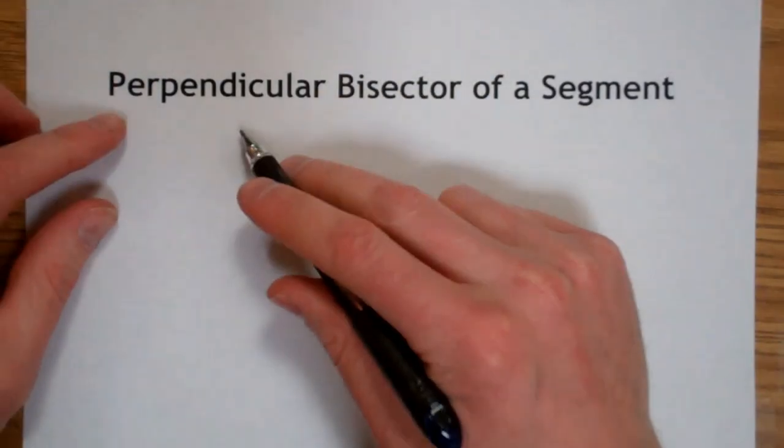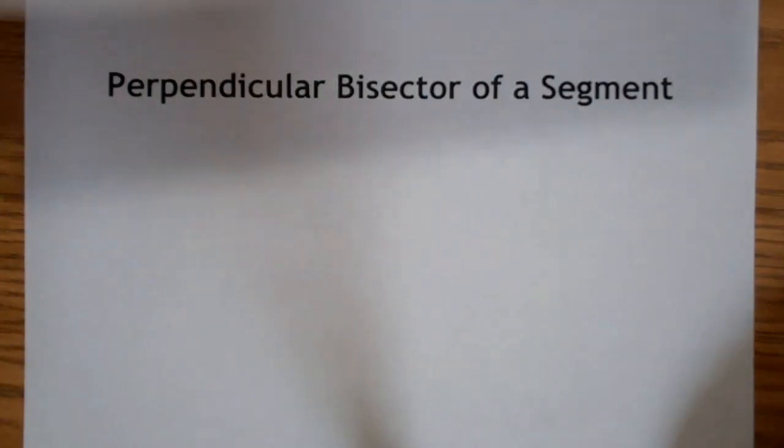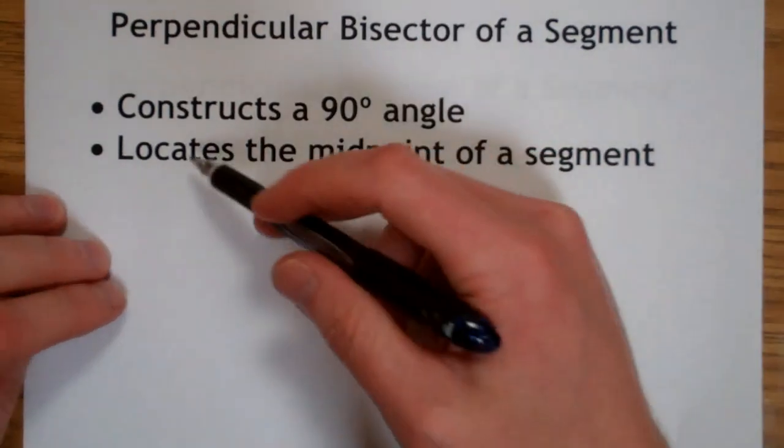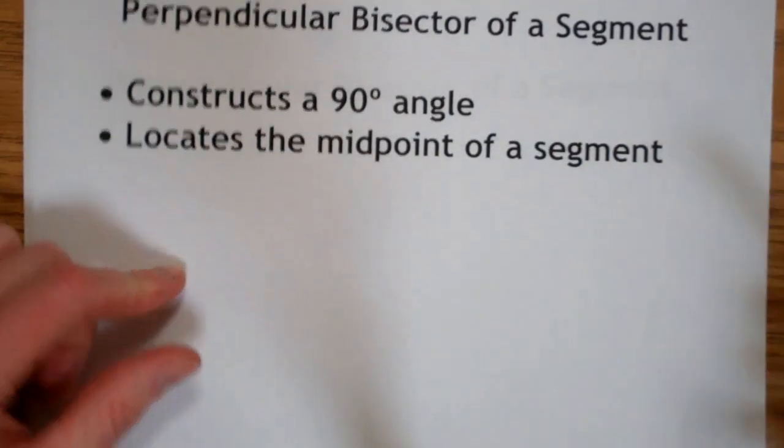This video will show you how to construct the perpendicular bisector of a segment. You can use this construction to construct a 90 degree angle and it also locates the midpoint of a segment.